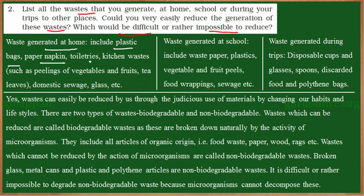Other home wastes include papers, napkins, toiletries, and kitchen waste. In the kitchen, the organic remains of vegetables, fruits, leaves — the leftover parts of vegetables, fruits, or tea leaves — all become kitchen waste. Domestic waste includes human excreta and broken glass or anything thrown in the dustbin.